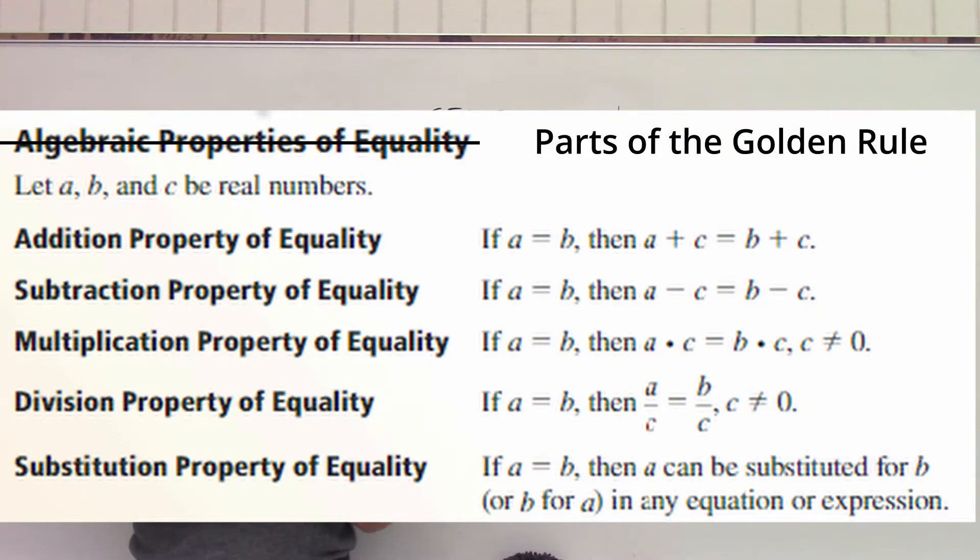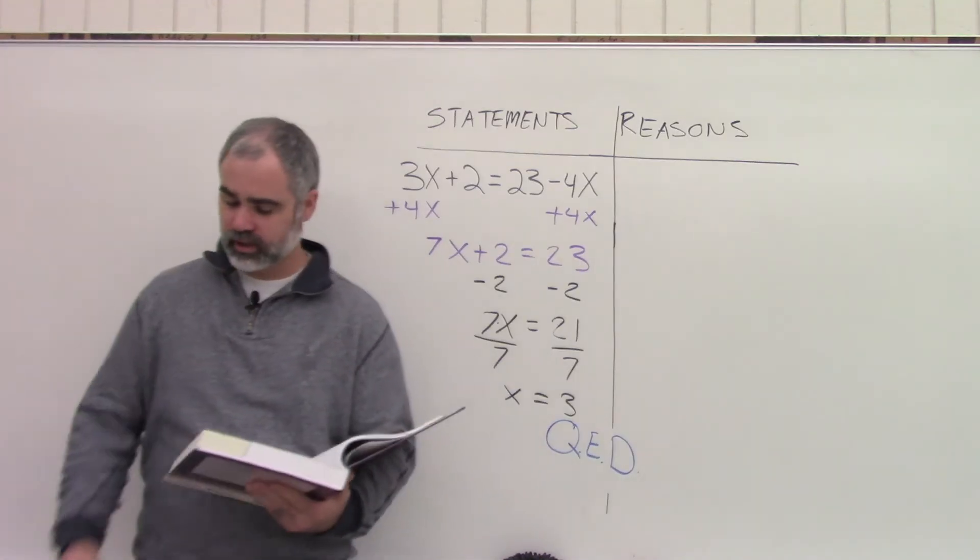Lastly, we have the substitution property of equality. And that just means if I already know what something equals. So for example, if I know that x already equals three at the beginning, something has told me that in the problem. You don't have to write that down. You can substitute in three for x every time you see an x.